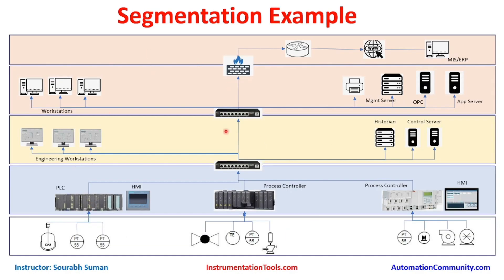Now let's look at this example. We are aware of this architecture — this is a Purdue model of a basic DCS. Here we have created one segment containing all our physical interfaces. At the next level we have PLCs, HMIs, and process controllers — these two levels together form one segment. Whatever communications go from this segment to another, we can put a firewall or a Layer 3 switch with access control lists here to control communications from these devices.